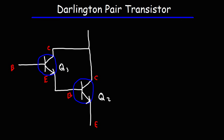Now, let's say that the current gain — the DC beta value of transistor 1 — is 100. And we're going to say that the current gain of the second transistor is 200. What is the net current gain of this Darlington pair transistor?